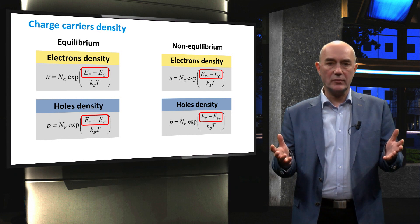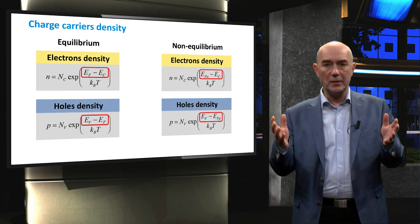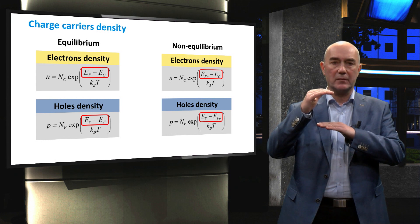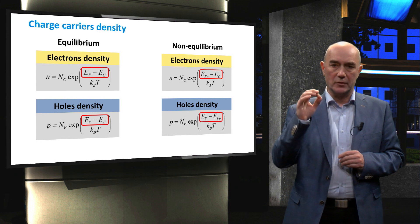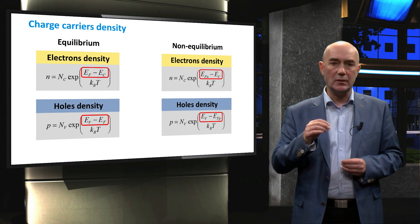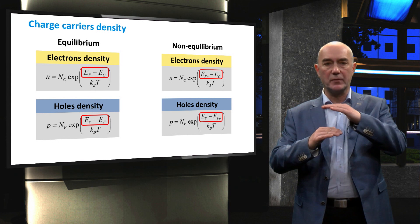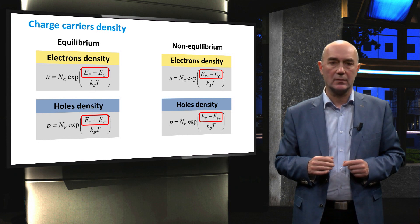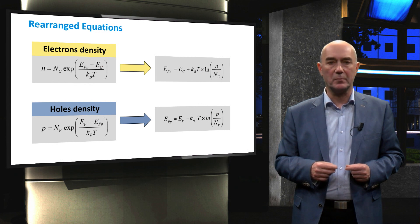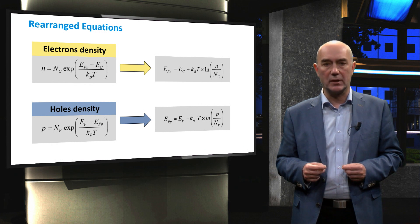For the density of electrons excited into states in the conduction band, you have to use the difference between the conduction band edge and the quasi-Fermi level for electrons. For the concentration of holes occupying states in the valence band, you need to use the difference between the valence band edge and the quasi-Fermi level for holes. You can use these equations to calculate the quasi-Fermi level positions for a given carrier density in a non-equilibrium situation.